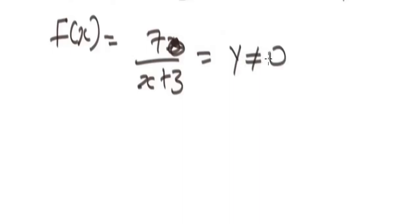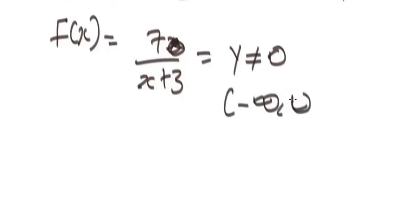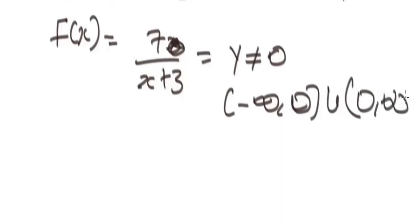So the range of this function will be all real numbers from negative infinity to positive infinity, except zero. To represent it in interval notation, you write all real numbers from negative infinity to zero, union zero to positive infinity, not including zero.